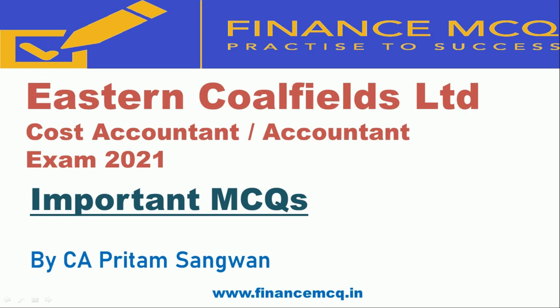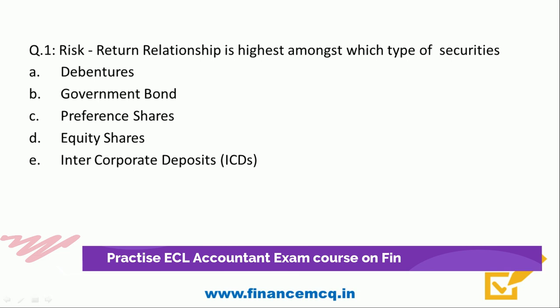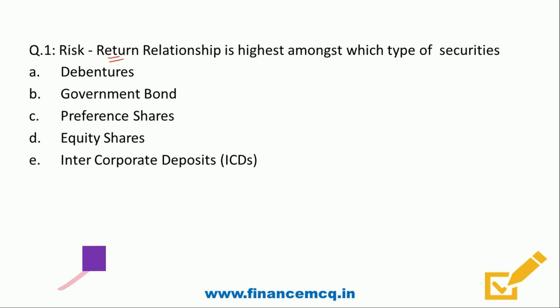Question 1: Risk-return relationship is highest amongst which type of securities? Option A: Debentures, Option B: Government bonds, Option C: Preference shares, Option D: Equity shares, Option E: Inter-corporate deposits. When talking about risk-return relationship, we identify which security has high or low risk. Debentures are mostly secured, so risk falls down. Government bonds are also secured, so risk and return are both less.